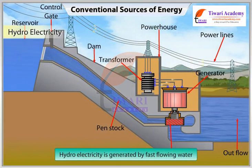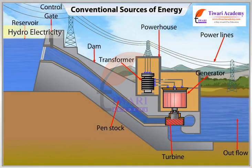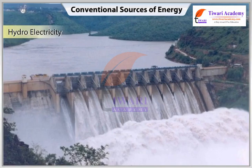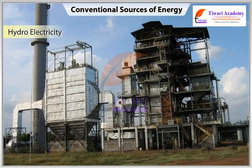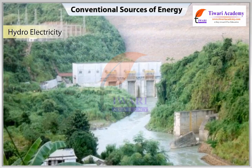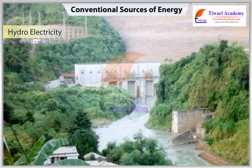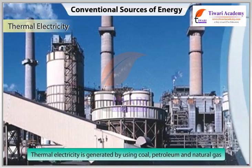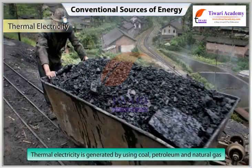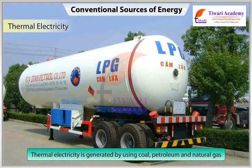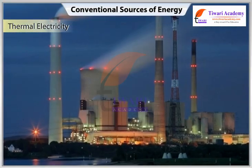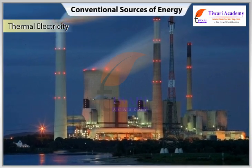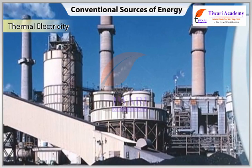Hydroelectricity is generated by fast-flowing water, which is a renewable resource. India has a number of multi-purpose projects like the Bhakra-Nangal, Damodar Valley Corporation, and the Kopili Hydro Project producing hydroelectricity. Thermal electricity is generated by using coal, petroleum, and natural gas. The thermal power stations use non-renewable fossil fuels; there are over 310 thermal power plants in India.